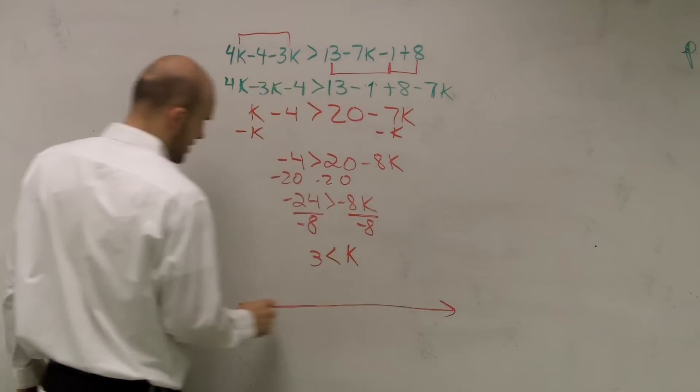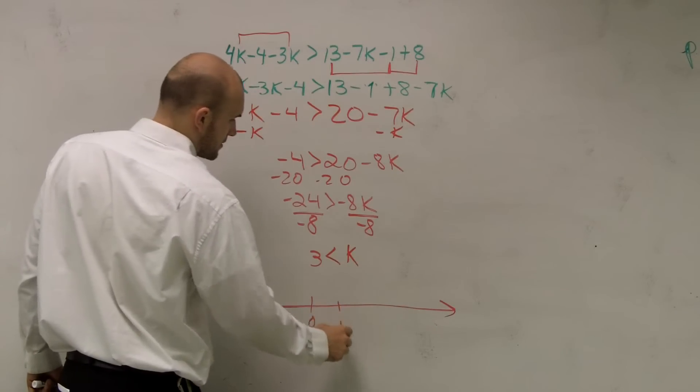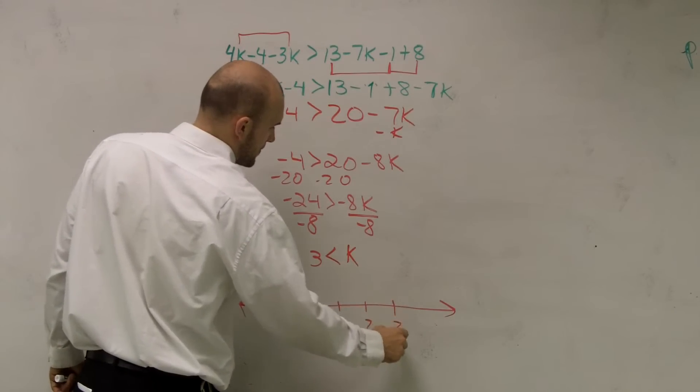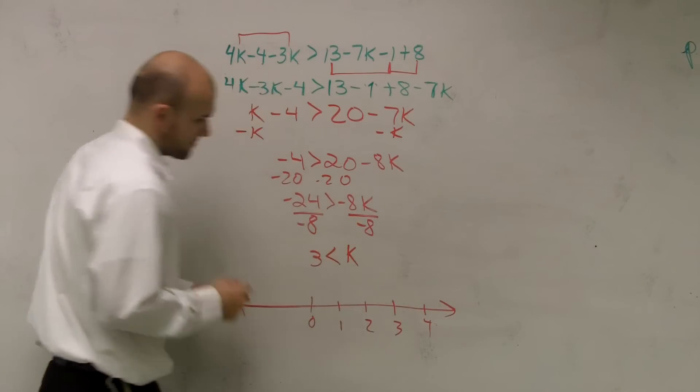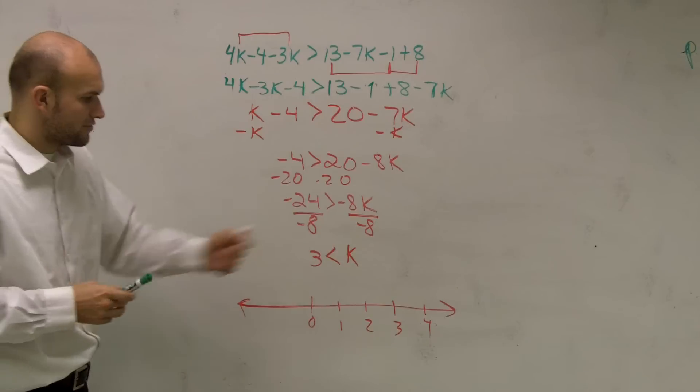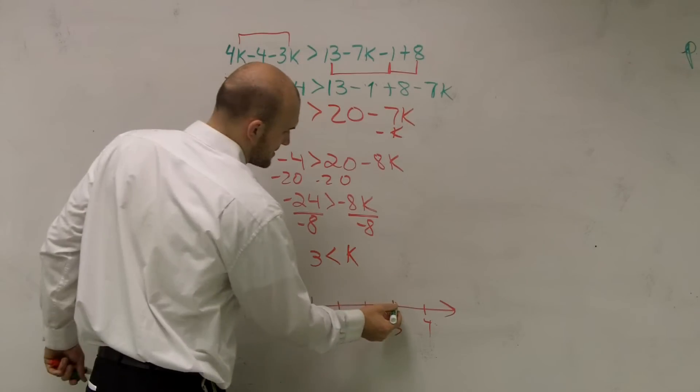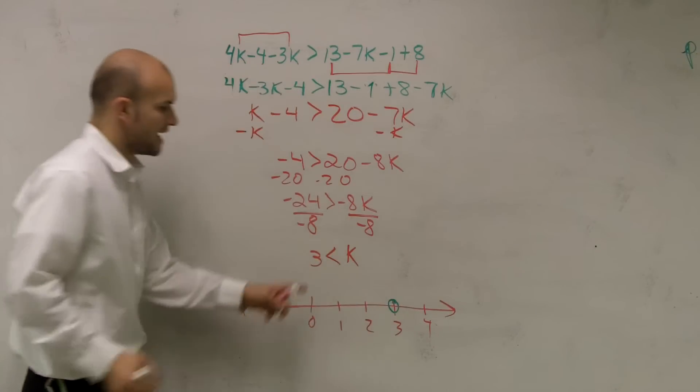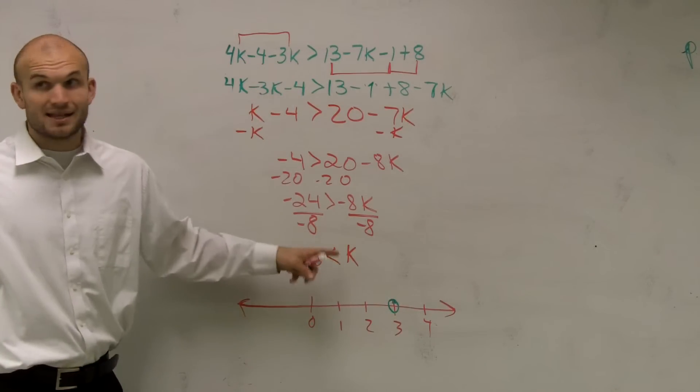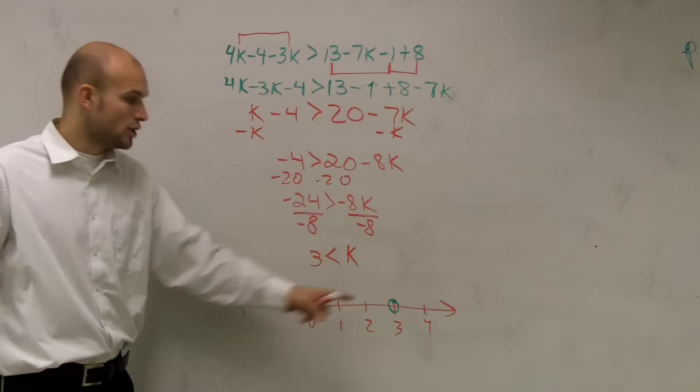So, now, let's do our number line. Okay? So, we go to 3. Make a nice big dot. Now, since it's less than and not less than or equal to, I'm going to have an open circle.